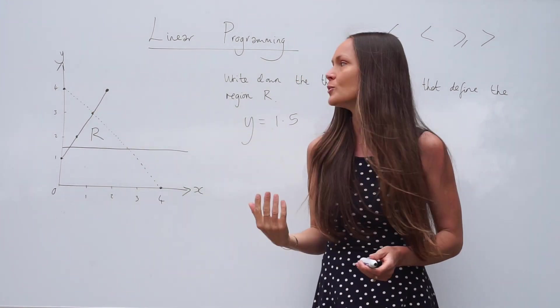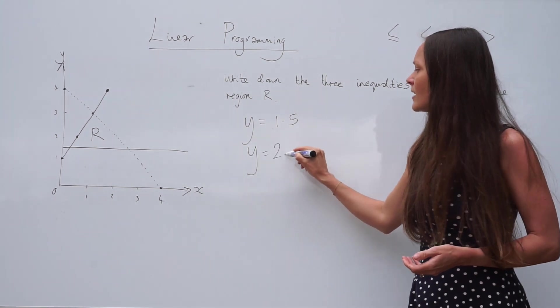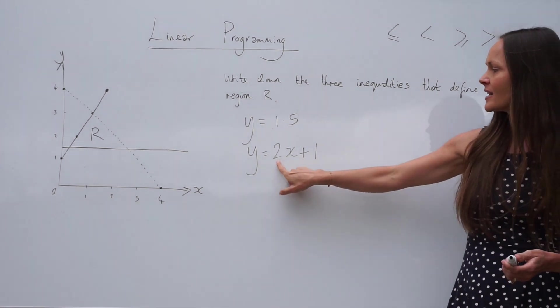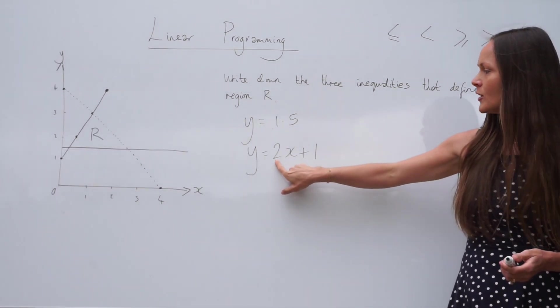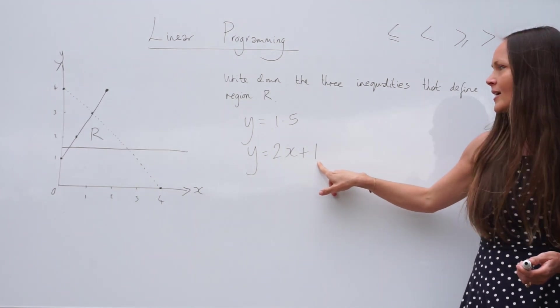So that means the gradient would be positive 2. So if I write down the equation of that line, it would look like this: y equals 2x plus 1. The gradient is the number that goes in front of the x value. And the y intercept, positive 1, goes at the end.